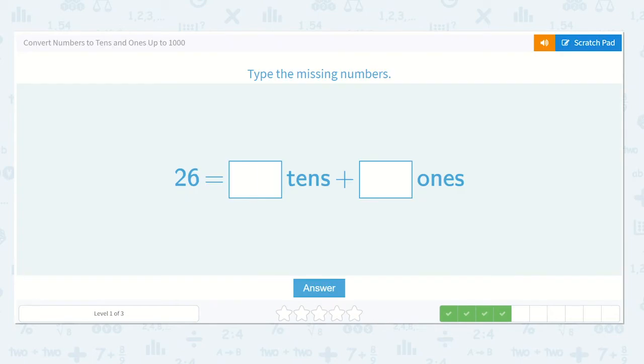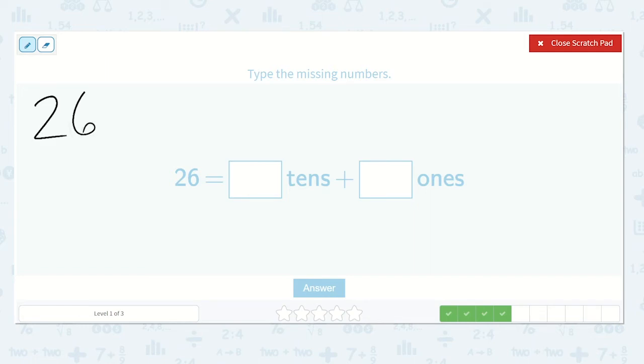Now we have 26. What number is in my tens place? Yes, two. And what number is in my ones place? Six.